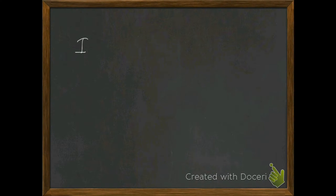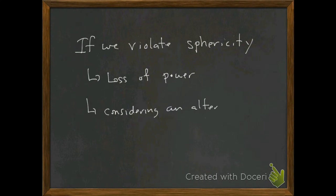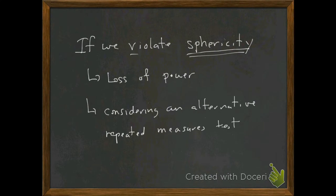Now, if we violate sphericity, we're going to have a loss of power, and we can alleviate this by considering an alternative repeated measures test. The Greenhouse-Geisser is a very commonly used repeated measures test in the situation where sphericity is violated, and I'm going to show you how to take care of that.